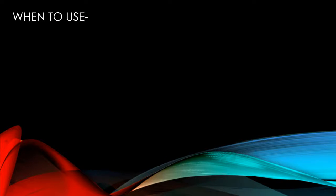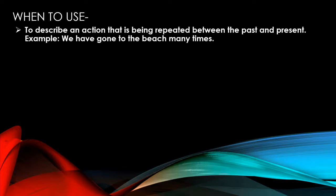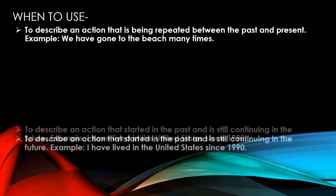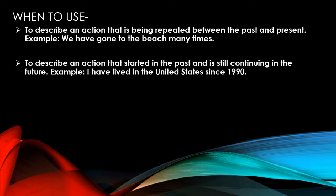Now we'll see when to use this tense. First, to describe an action that is being repeated between the past and present. Example: 'We have gone to the beach many times.' Second, to describe an action that started in the past and is still continuing. Example: 'I have lived in the United States since 1990.'